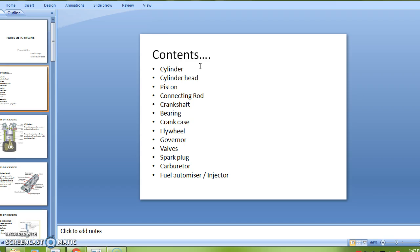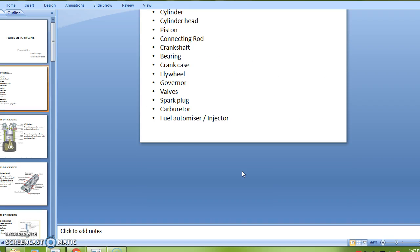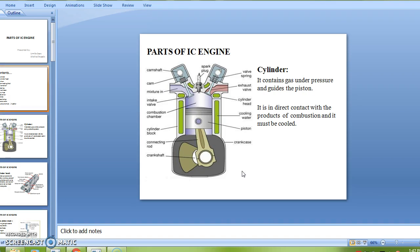As well as its diagram, first part is cylinder, second one is cylinder head, third one is piston, connecting rods, crankshafts, bearing, crankcase, flywheel, governor, valves, spark plug, carburetor, fuel atomizer or injector.